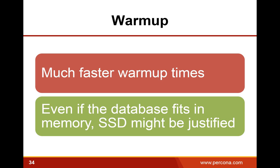Next question: would the recommendations for MySQL settings for flash also apply to provisioned IOPS Amazon EBS volumes, which use flash behind the scenes? Yes, that is right — a lot of the optimizations would apply to Amazon provisioned IOPS, or if you're using local flash storage in the cloud. Next question: can you add a little bit more about retention and what it does for flash?